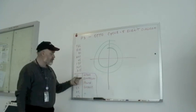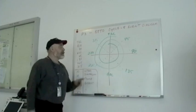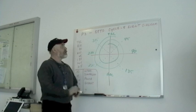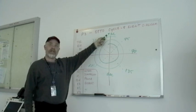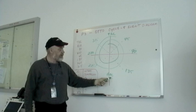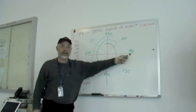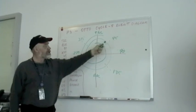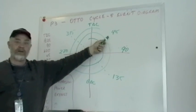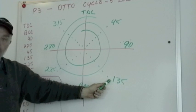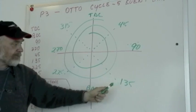Now we're going to place the targets. Target one is TDC — piston top dead center. Then BDC — bottom dead center. Then 90 degrees, 270 degrees. This is 45 degrees of crankshaft travel, here is 135 degrees crankshaft travel, 225 and 315 degrees of crankshaft travel.